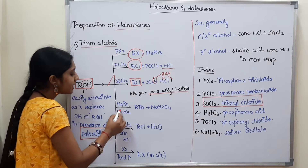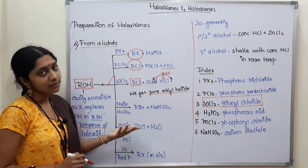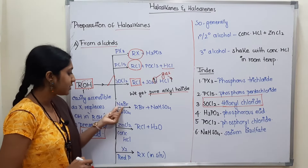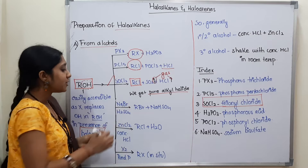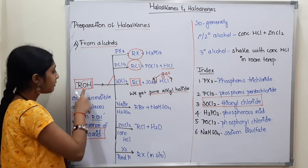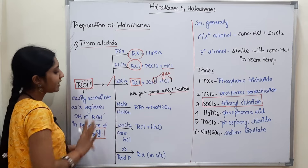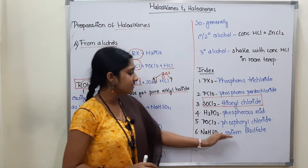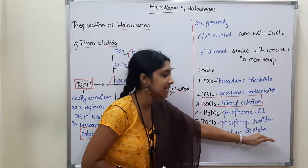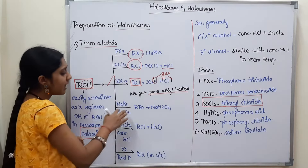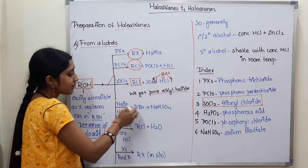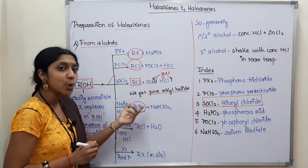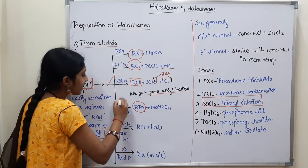Next method uses NaBr and H₂SO₄. H₂SO₄ is sulfuric acid and NaBr is sodium bromide. In this reaction, OH is replaced by Br. The products are RBr (alkyl bromide) and NaHSO₄ (sodium bisulfate). Bromide is the best reagent for preparing bromine compounds — alkyl bromide.